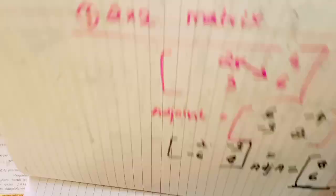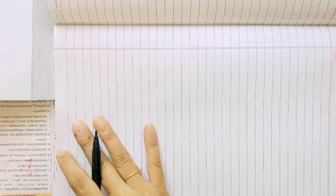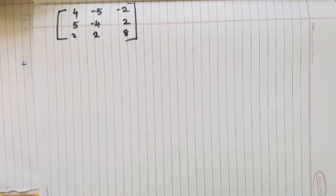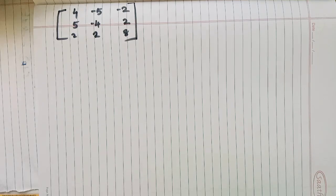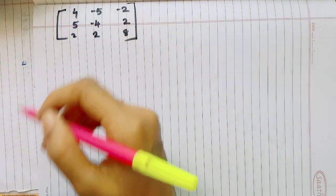Now this is the 3×3 matrix. We have to ask the question: What is the Cofactor? What is the Minor? What is the Adjoint? What is the Inverse? This is the 3×3 matrix we will work through.